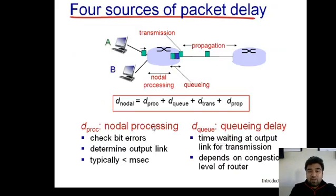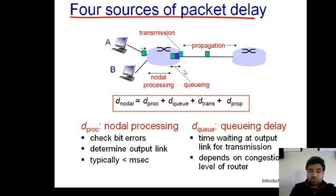What you see on screen is called latency or end-to-end delay. This end-to-end delay is formed by four types of delays: processing delay, queuing delay, transmission delay, and propagation delay. Consider a scenario where two systems are connected through a router, and that router is connected to another router via a single link.